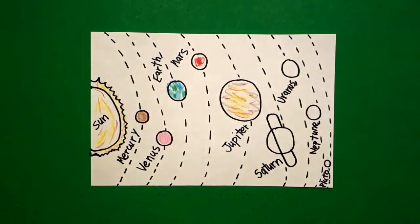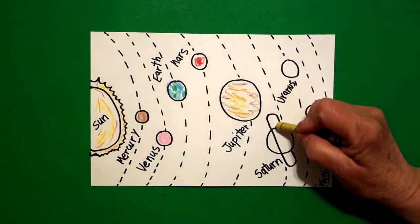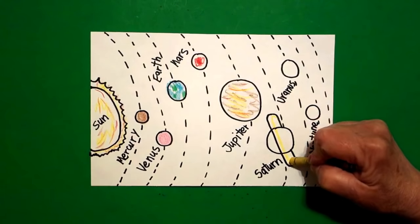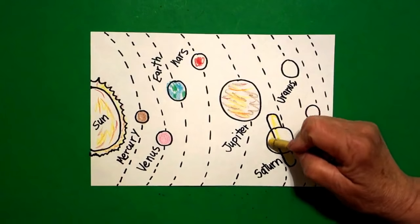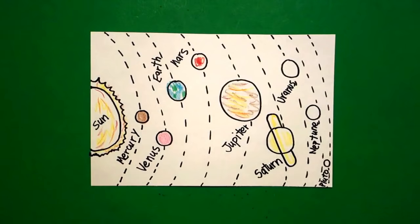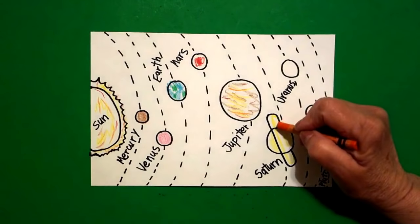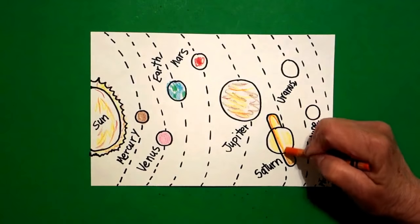Next, Saturn. So I took my yellow and I made my ring. There's more than one. But I took this ring in this part of the planet and made that yellow. And then I just went over this again with my orange.